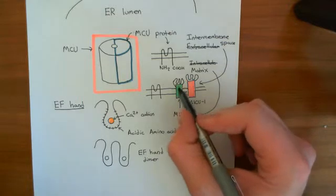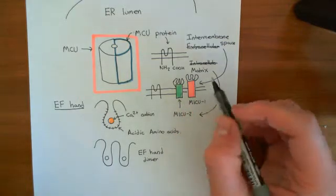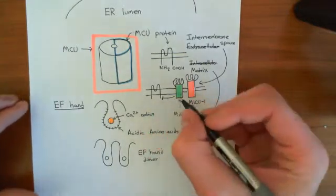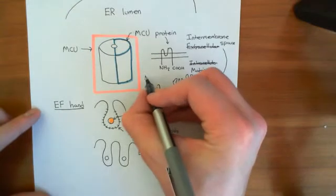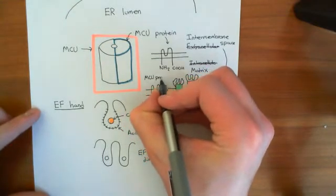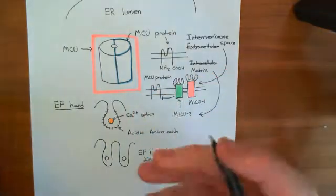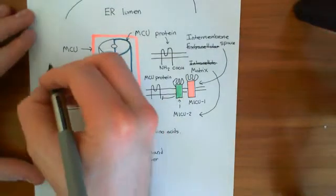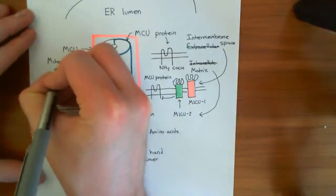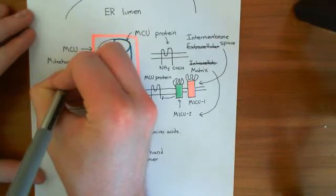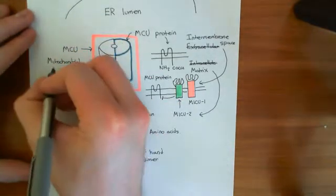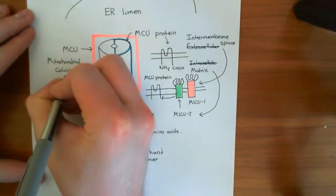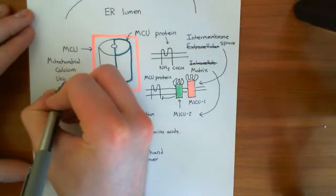When there's no calcium bound to their EF hand dimers, the activity of MICU2 is to inhibit the mitochondrial calcium uniporter protein. MICU2 is going to make it more likely that the MCU channel — the mitochondrial calcium uniporter — is closed, and therefore is not conducting calcium into the matrix of the mitochondria. That's when there's low calcium in the intermembrane space.